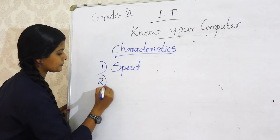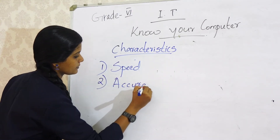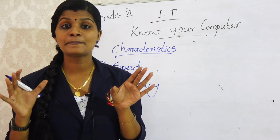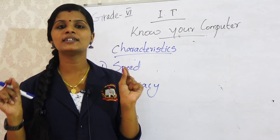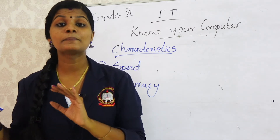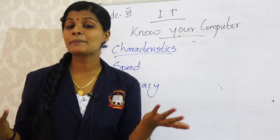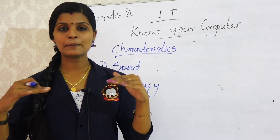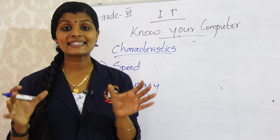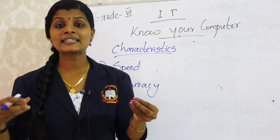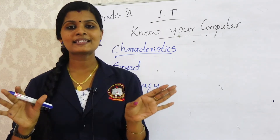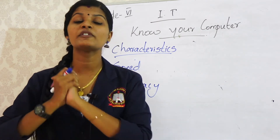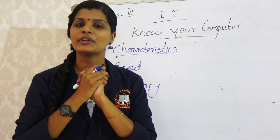The second characteristic is accuracy. Computers never make mistakes — that is a simple conclusion. We humans sometimes make mistakes, but computers will be perfect in doing their work. If we make a mistake while giving input, that is our error, but the computer itself will not commit mistakes in doing its work.